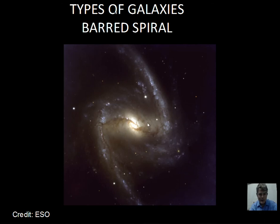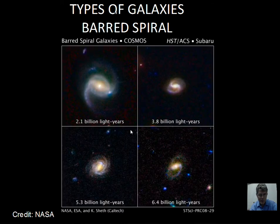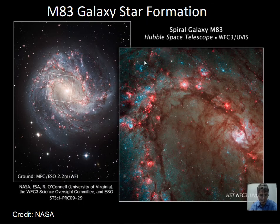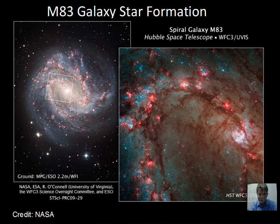Now the barred spirals — instead of a simple spherical nucleus, we get a bar of material that goes through the nucleus. This would be an SBC with very prominent, widely spaced spiral arms. In the H2 regions we have hot young stars ionizing the hydrogen gas, and as the electron comes back to the proton and recombines, it falls through various energy levels. In the visible range, one prominent transition is falling from level 3 down to level 2, which emits red light — so this red light is from hydrogen in these star-forming regions.